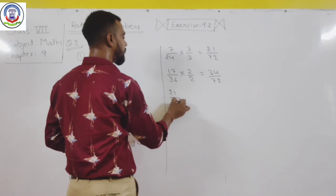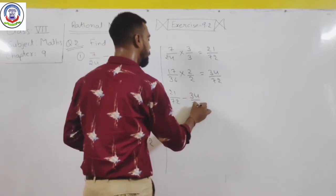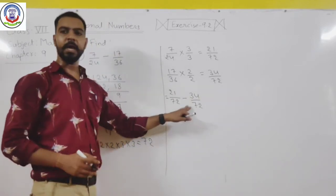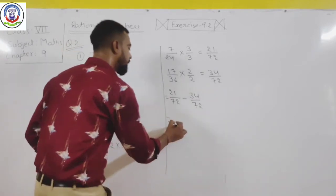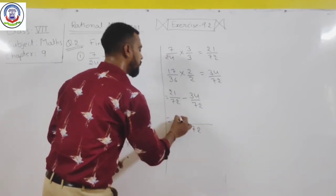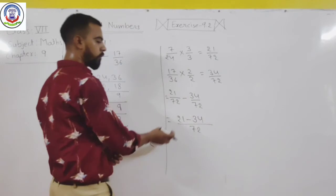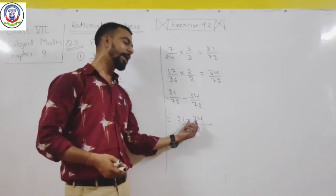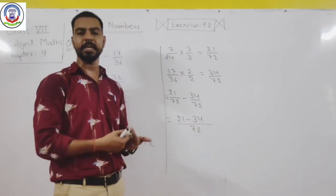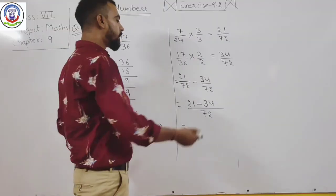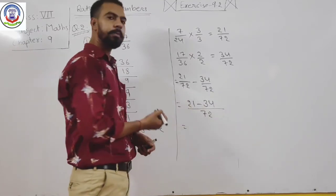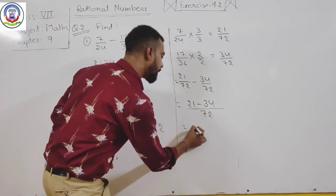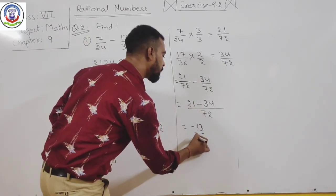Now subtract: 21 upon 72 minus 34 upon 72. The denominator is equal so we subtract. 21 is a positive number and 34 is a negative number — the larger absolute value is 34 which is negative, so we subtract 21 from 34 and the answer will be minus 13 upon 72.